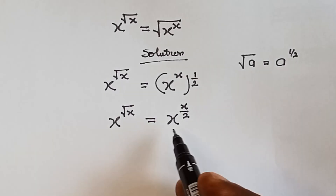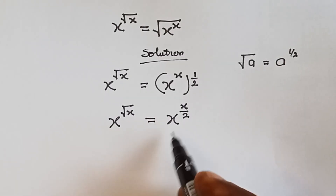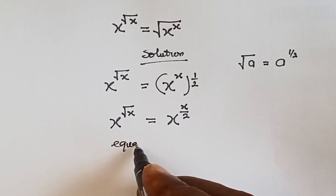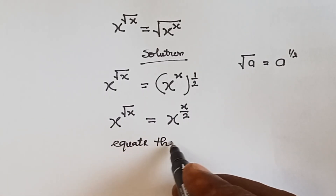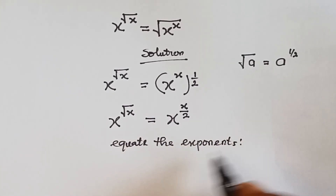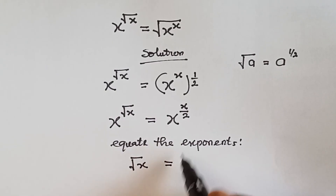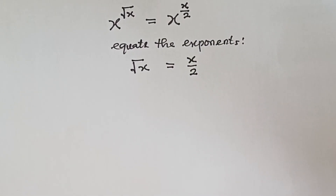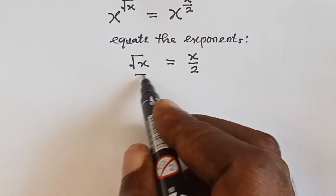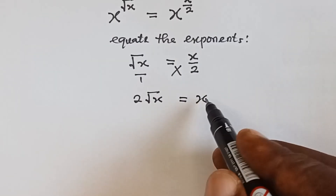From here we can equate the exponents, because the bases are the same — we have x and x. So equating the exponents means that root x equals x over 2. From there we can cross multiply, giving us 2 root x equals x.